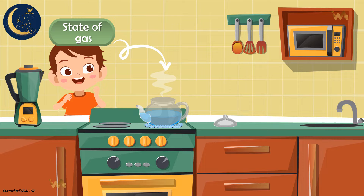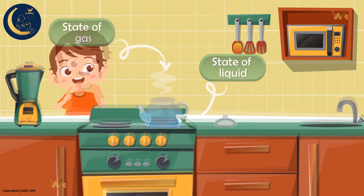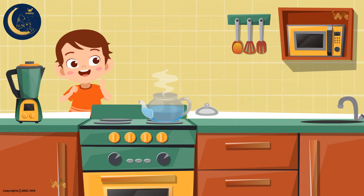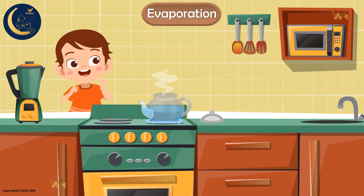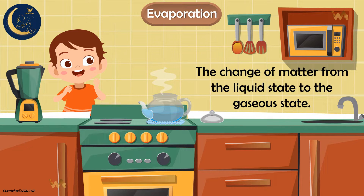But wait a moment. There is water in this pot, and the water is in a liquid state. Where did this vapor come from? Look, my friends — the water changed into vapor when it was heated. This process is called evaporation. Evaporation is the change of matter from the liquid state to the gaseous state when it is heated.